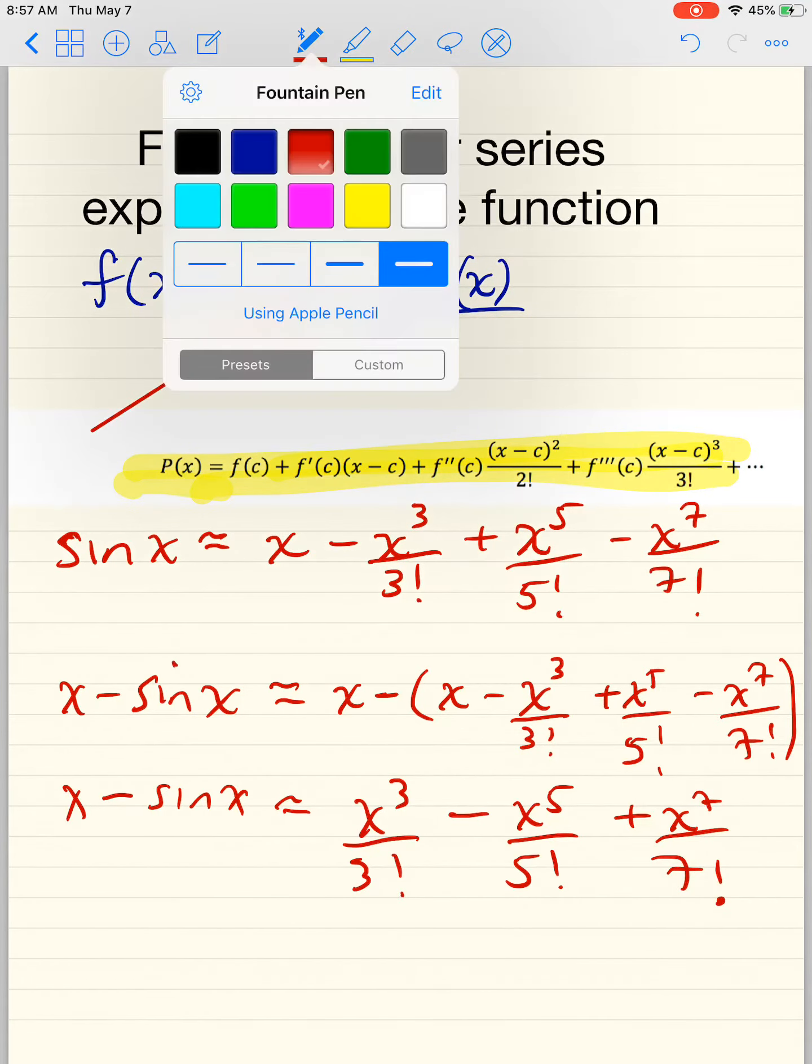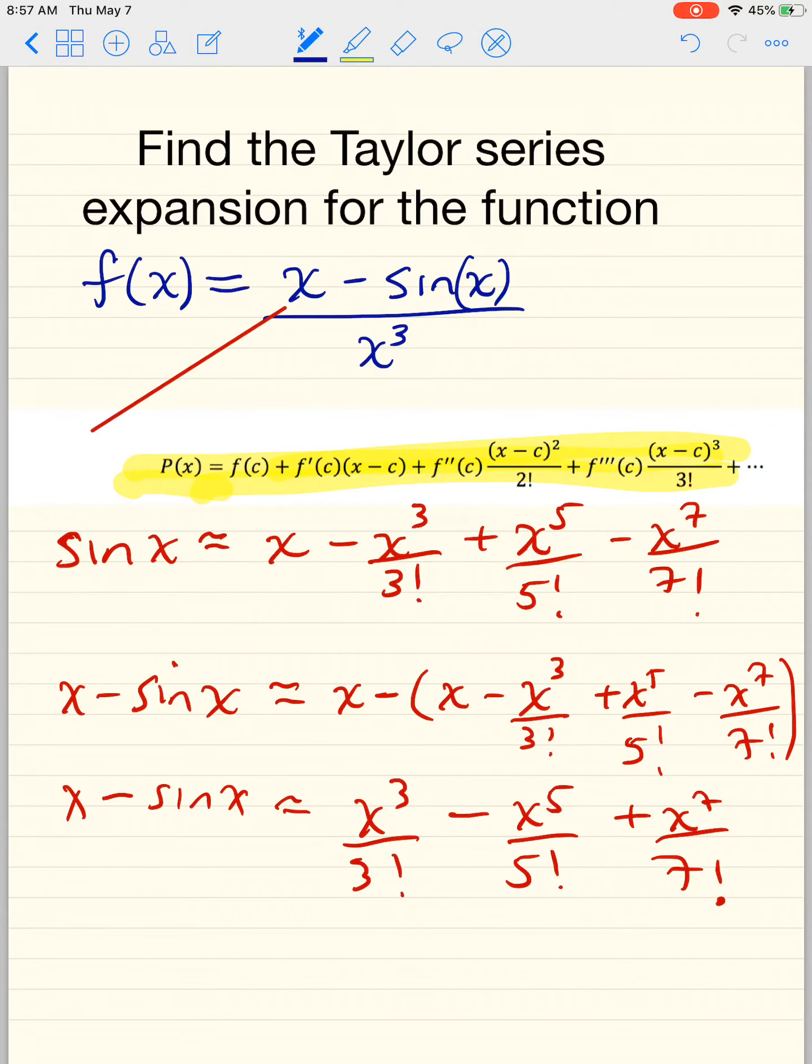Wonderful! Let's change colors. I can't believe I'm using the same color. Now I'm going to divide by x to the third in each case. So x minus sine x over x to the third. You guys are really smart. That's just going to give you 1 over 3 factorial. Remind yourselves that 3 factorial, 5 factorial, 7 factorial are just coefficients.